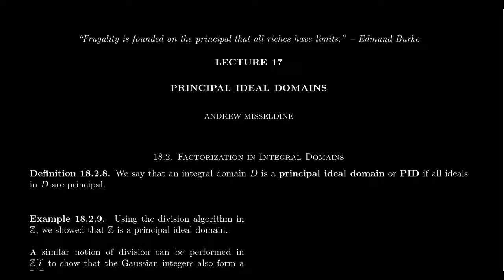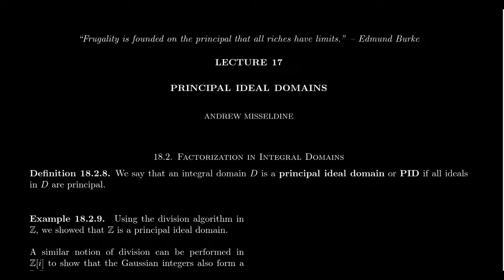As you recall, in lecture 16 we talked about the idea of a unique factorization domain. In lecture 17, we're going to continue this discussion talking about principal ideal domains, and the two concepts are related to each other. We'll define what a principal ideal domain is. It is, in fact, going to be a domain — an integral domain — meaning a commutative ring with unity such that the cancellation axiom is satisfied and there are no proper divisors of zero.